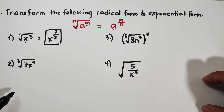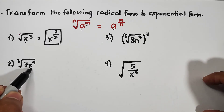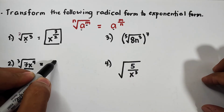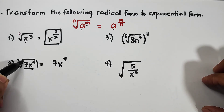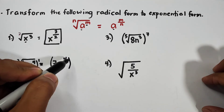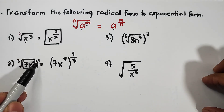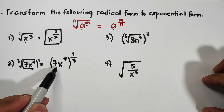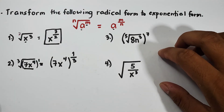For item number two, we have the cube root of 7x to the fourth power. The exponent 4 is for x only. Copy the radicand 7x to the fourth power — there is an invisible exponent of 1 outside, so it becomes raised to 1 over 3. Enclose the two bases x and x to the fourth power in parentheses.